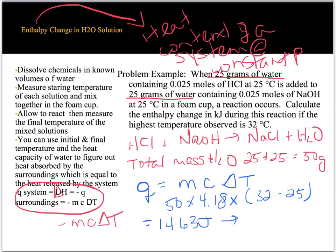The sign of this is negative, because remember it's the opposite of MC delta T. So the enthalpy change is −1,463 joules. That negative sign is telling us that energy was released to the surroundings.